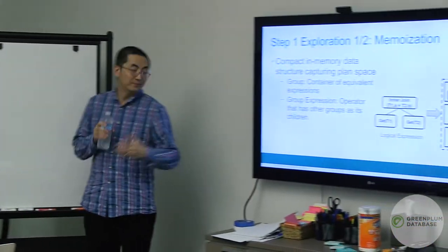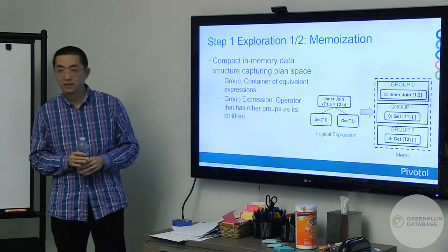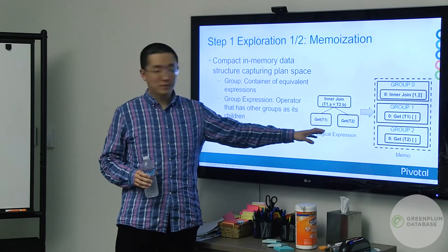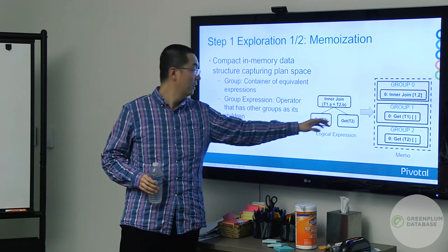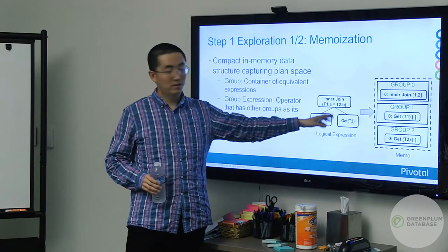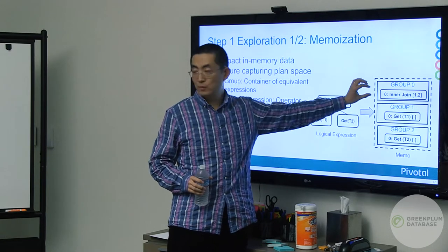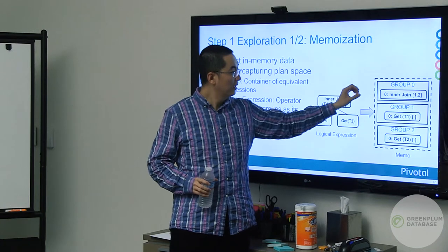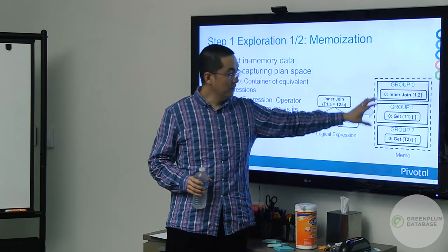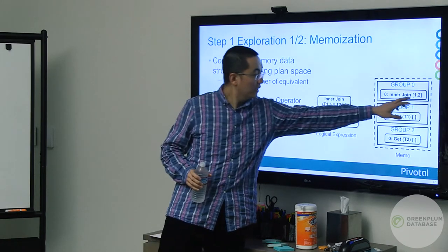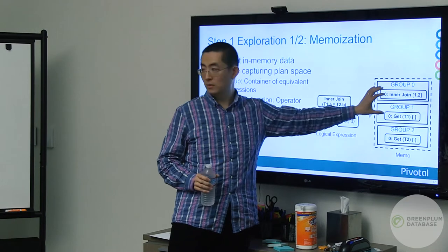Here's an example of step one — the Memo. Memo is a compact in-memory data structure that stores a large number of query plans. Take a logical expression: two tables T1 and T2 joined on condition T1.A = T2.B. When this breaks down into memo, we break it into memo groups, each containing memo expressions. The definition of a group is that all expressions within it are semantically equivalent. The inner join indicates it depends on groups one and two, from which we can reconstruct the original plan.